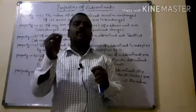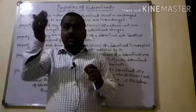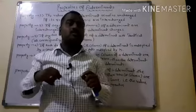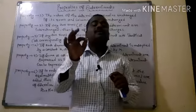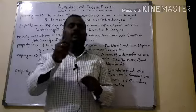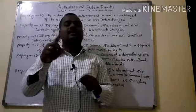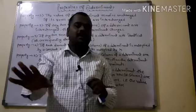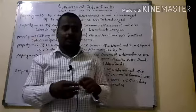The first property says that if the rows and columns of a determinant are interchanged — essentially taking the transpose — then there is no change in sign. The determinant value remains unchanged. This is the first property.